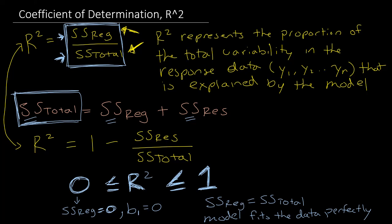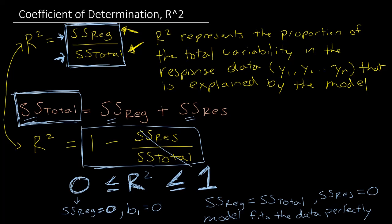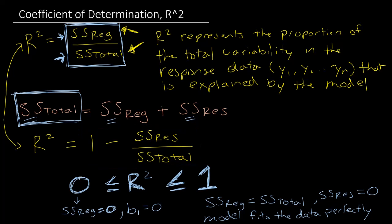When the model fits the data perfectly, SS residuals equals 0. Looking at the alternative formula, that 0 drops out and you're left with 1. In general, if we want a good fit, we want r-squared to be close to 1. Getting a perfect fit probably won't happen with random variability in your response data, but you do want the sum of squares regression to be a large proportion of the total variability.